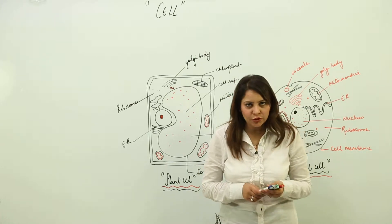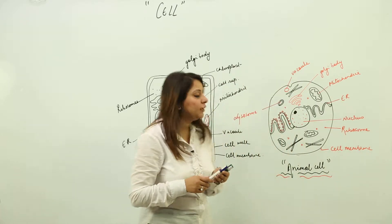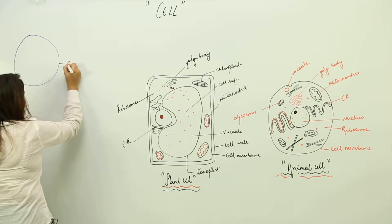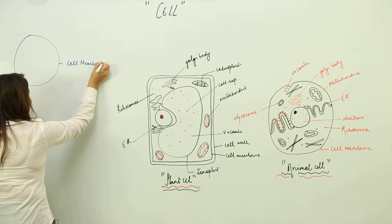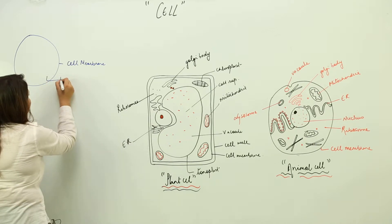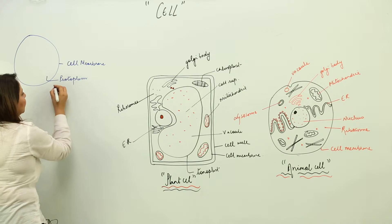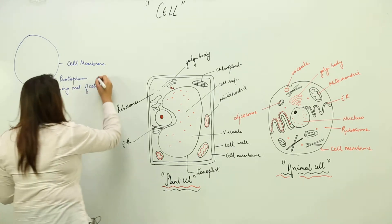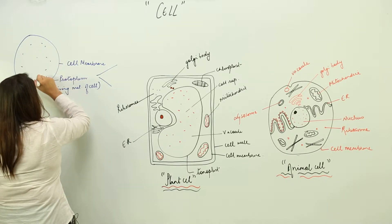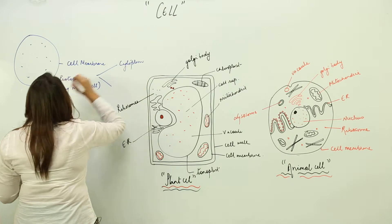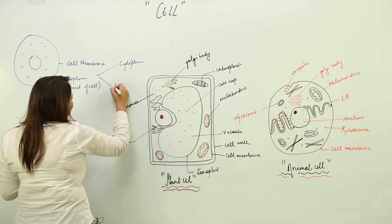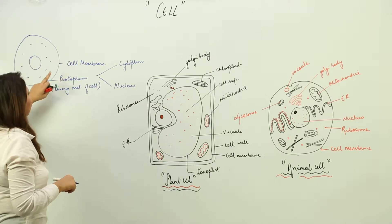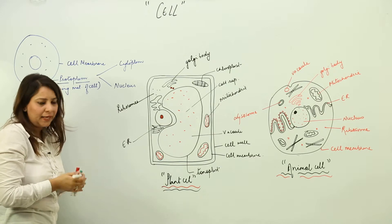We are going to start with the basic structure of the cell. A cell is made up of a cell membrane, and everything inside it is called protoplasm — the living material of the cell. Protoplasm is divided into two parts: the liquid part present within the cell, called cytoplasm, and the main controlling center, which is the nucleus. The cell membrane encloses the protoplasm.